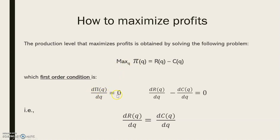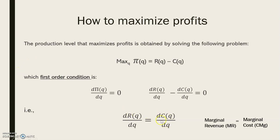Deriving the function and equaling this to 0 is called the first order condition. If I make the derivative of the profits and equal this to 0, this is the same as making the derivative of the revenues with respect to Q, minus the derivative of the cost with respect to Q, equals 0. So at the end, the derivative of revenues with respect to Q equals the derivative of cost with respect to Q. Since the derivative of total revenues is the marginal revenue, and the derivative of total cost is the marginal cost, when we maximize profits we find that marginal revenue equals marginal cost.